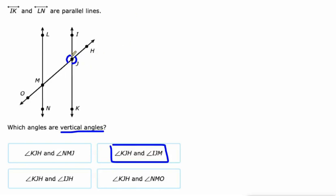So there are more vertical pairs here too, like IJH and KJM. And we also have LMJ and OMN. Those are vertical pairs. So all of those are vertical pairs, but we only needed that one: KJH and IJM.